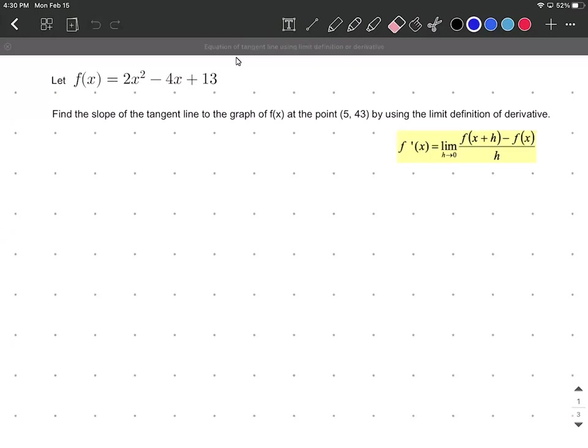In this video, our goal is to first find the slope of the tangent line of this graph f(x), given that f(x) = 2x² - 4x + 13 at the point (5, 43). After we do that, we're also going to compute the equation of the tangent line.